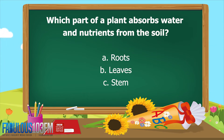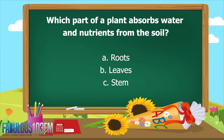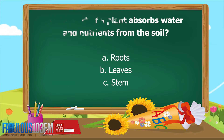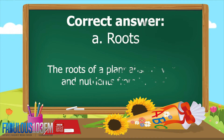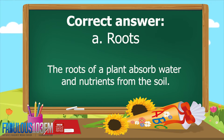The first question was: which part of a plant absorbs water and nutrients from the soil? Is it A, the roots; B, the leaves; or C, the stem? Shout your answer at the radio as loud as you can! The correct answer is A, the roots.